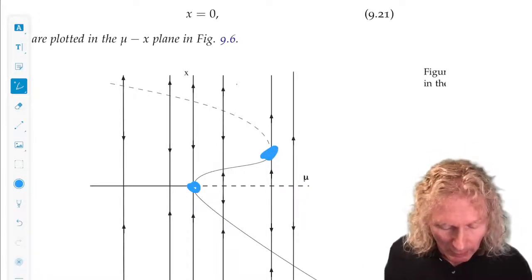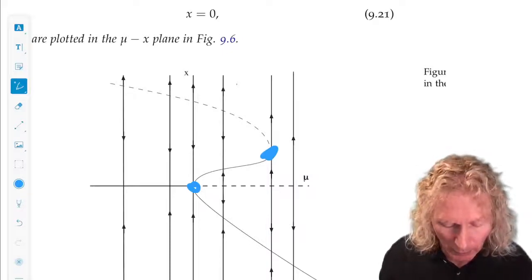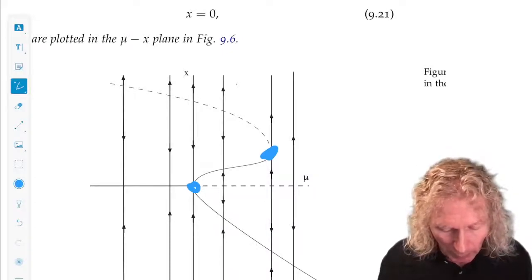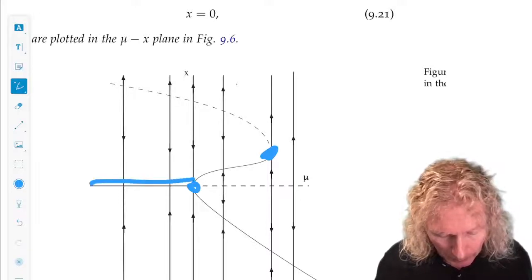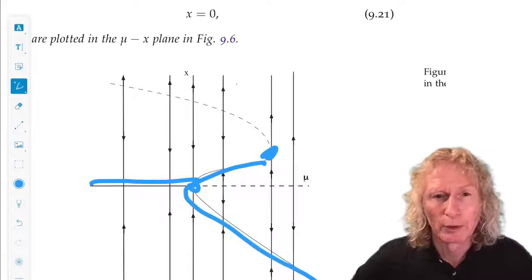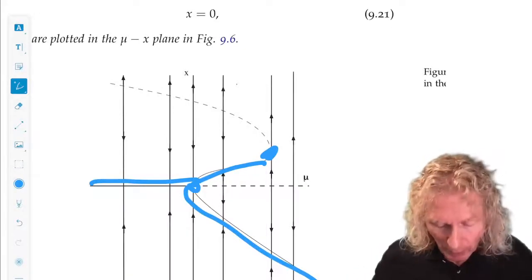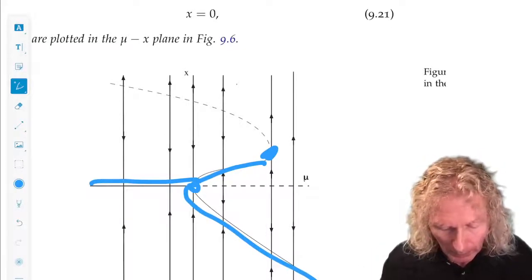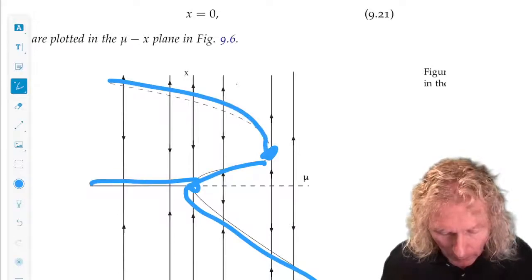Now you can see very different things going on in the system. Those branches of equilibria are all stable, and these are the only unstable ones.